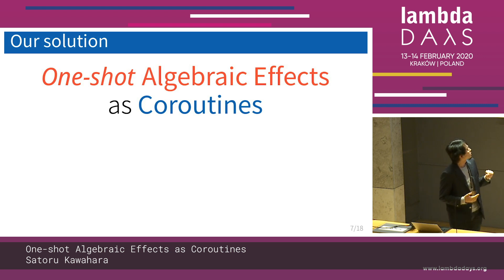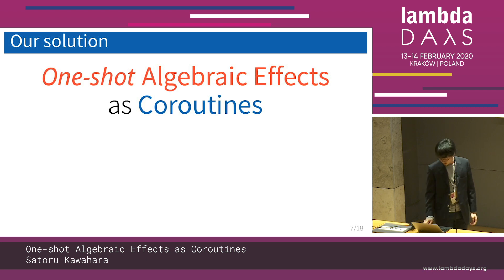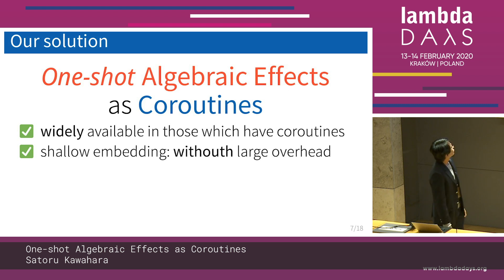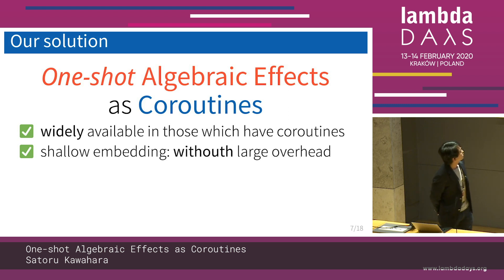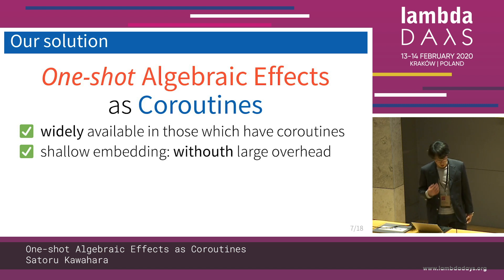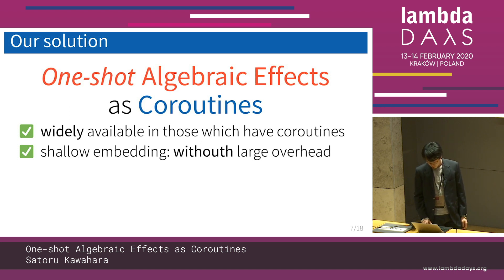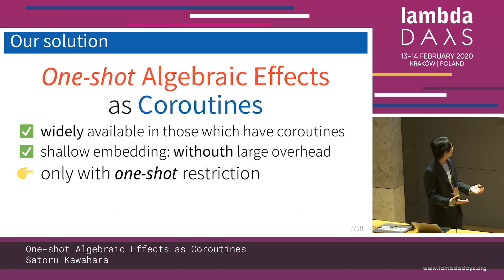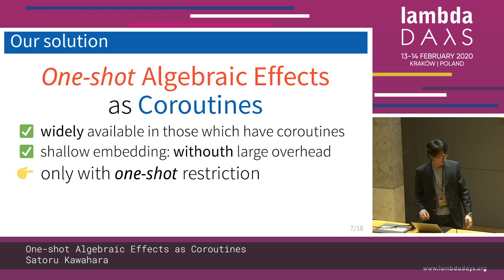We implement one-shot algebraic effects by using coroutines. Because our method uses coroutines, it can be widely available in many languages. And since our embedding is shallow, we can use this without large overhead. We require only one restriction: one-shot. What is one-shot? I'll talk about this later.